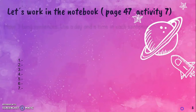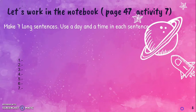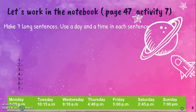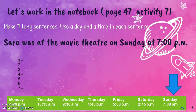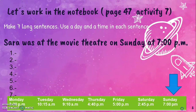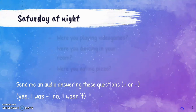Let's work in the notebook, page 47, activity 7. Make 7 long sentences — use a day and a time in each sentence. We have a scaling time. I'm going to make you an example using Sunday: 'Sarah was at a movie theater on Sunday at 7 p.m.' Use the structure. Now it's your turn — make this in your notebook. For the next activity, you have to send me an audio answering this question in positive or negative form: yes, I was, or no, I wasn't.